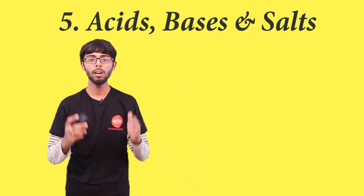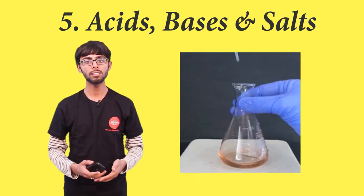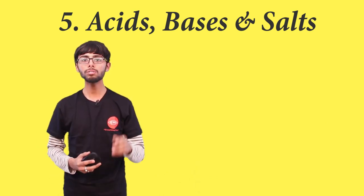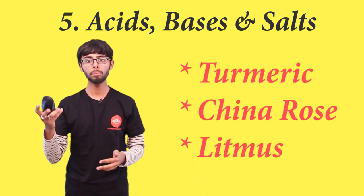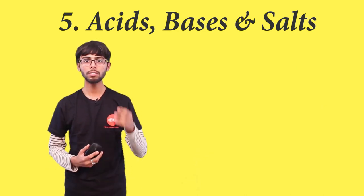Such substances are called indicators. These indicators change color when any acidic or basic substance is added to them. Some of the indicators which occur naturally are turmeric, China rose petals, and litmus. These are some of the natural indicators occurring in nature.